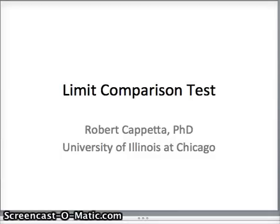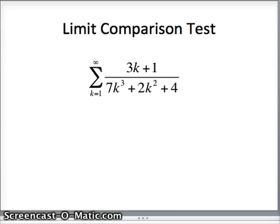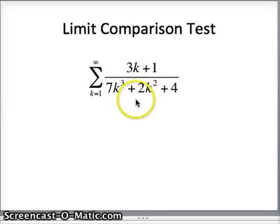This is Bob Capetta from the University of Illinois at Chicago and this lesson is on the limit comparison test. We're given the series: the sum as k goes from 1 to infinity of (3k + 1) over (7k³ + 2k² + 4), and our goal is to determine whether this series converges or diverges.